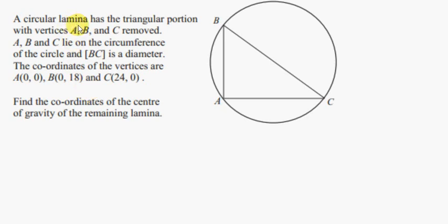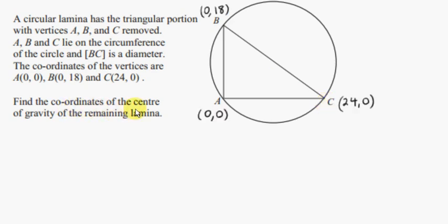A circular lamina has the triangular portion with vertices A, B and C removed. A, B and C lie on the circumference of the circle and BC is a diameter. The coordinates of the vertices are A(0,0), B(0,18) and C(24,0). Find the coordinates of the center of gravity of the remaining lamina.